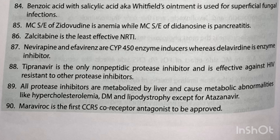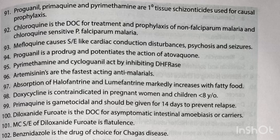Maraviroc is the first CCR5 co-receptor antagonist to be approved. Proguanil, primaquine and pyrimethamine are primary tissue schizonticides used for causal prophylaxis. Chloroquine is the drug of choice for treatment and prophylaxis of non-falciparum malaria and chloroquine-sensitive Plasmodium falciparum malaria. Mefloquine causes side effects like cardiac conduction disturbances, psychosis and seizures.